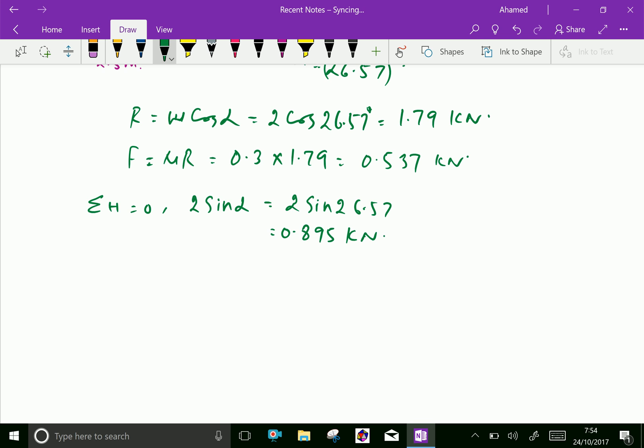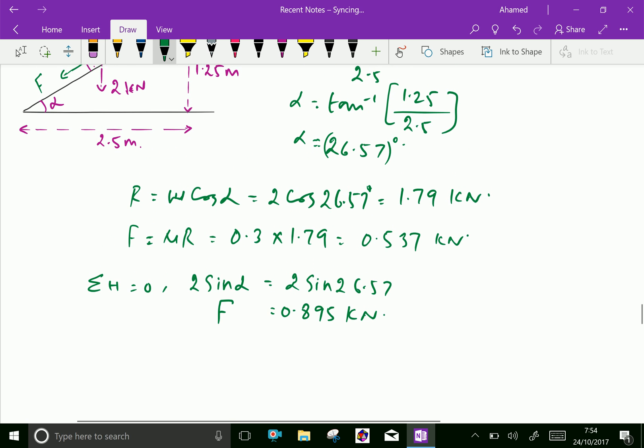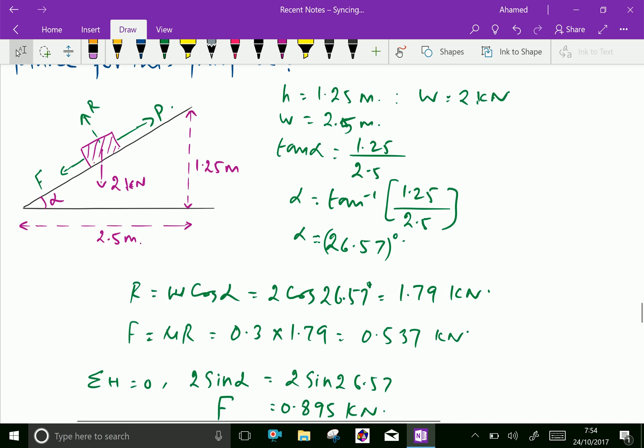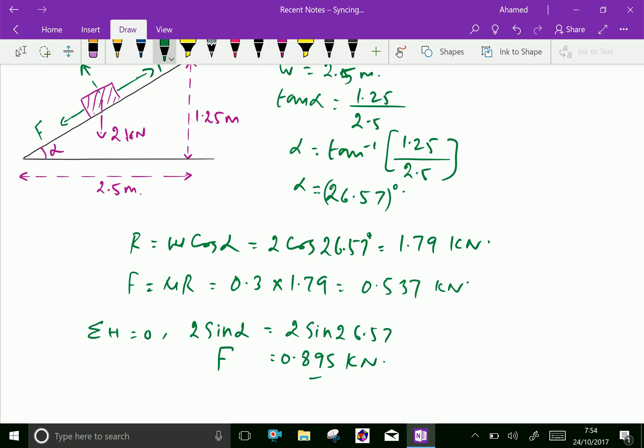We know that the force along the plane which is responsible for sliding is more than the force of friction. Here, here this force that is F here, F is greater than the force of friction. We got force of friction is 0.537.